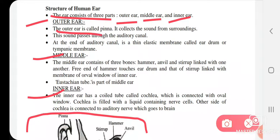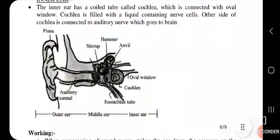The outer ear is called pinna. It collects the sound from surroundings. This sound passes through the auditory canal. At the end of auditory canal is a thin elastic membrane called ear drum or tympanic membrane.